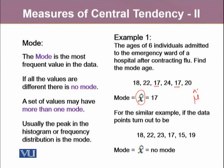For a similar example, if the data points turn out to be 18, 22, 23, 17, 15, and 19, in this data set we can observe that there is no repetition in the values. All the observations occur just once. Hence, we will declare that there is no mode. It's wrong terminology when we say that the mode is zero, because zero is a legitimate value in the data. Please avoid saying that mode is zero in that situation. The right answer is no mode.